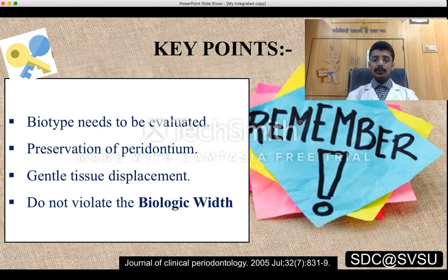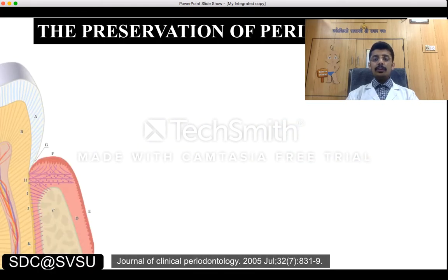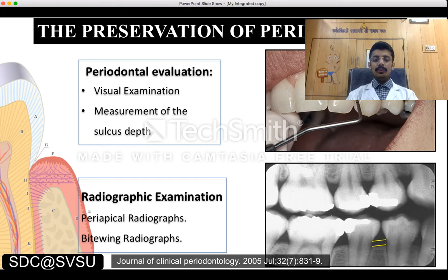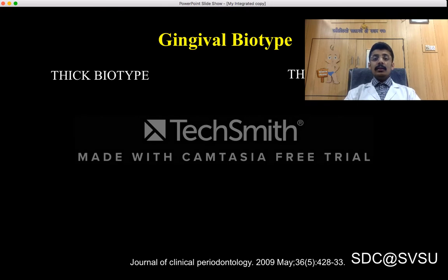There are certain key points to consider while restoring gingival health: biotype needs to be evaluated, preservation of periodontium, gentle tissue displacement, and not violating the biological width. The preservation of periodontium includes periodontal evaluation with visual examination and measurement of sulcus depth, as well as radiographic examination including periapical and bitewing radiographs. Gingival biotype refers to the thickness of gingiva in the faciopalatal direction, and there are two types: thick biotype and thin biotype.